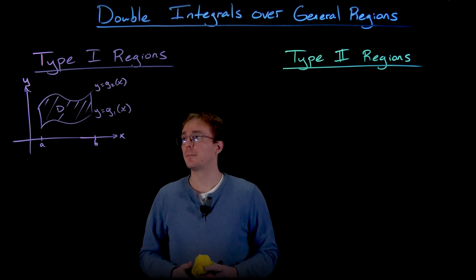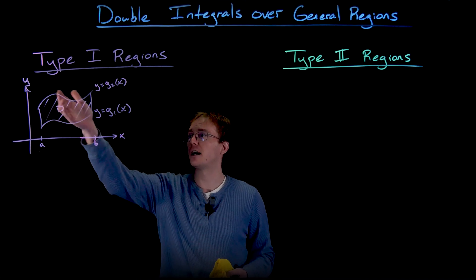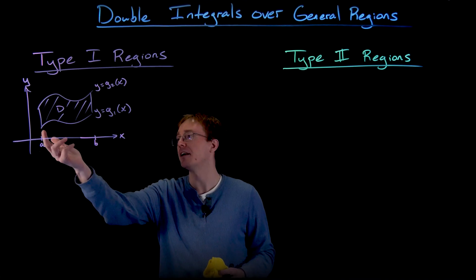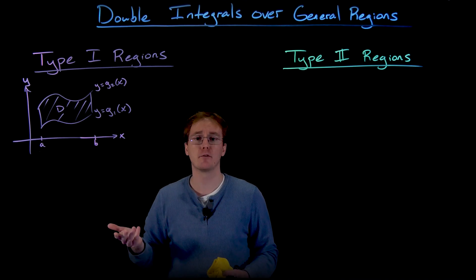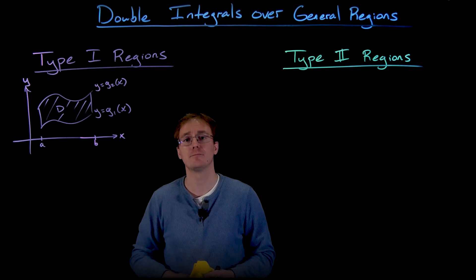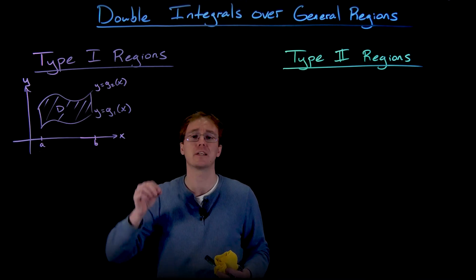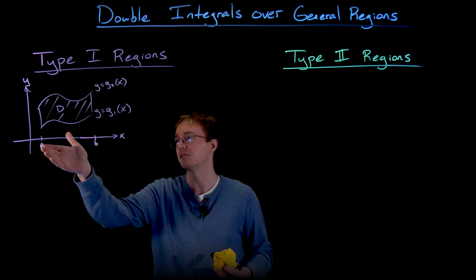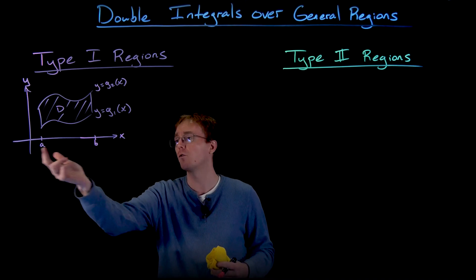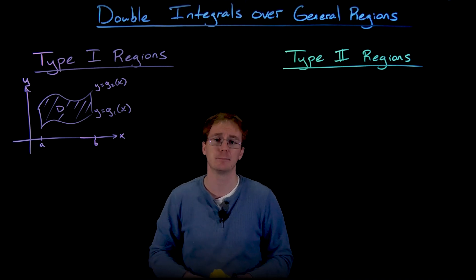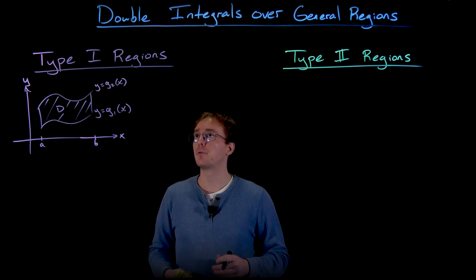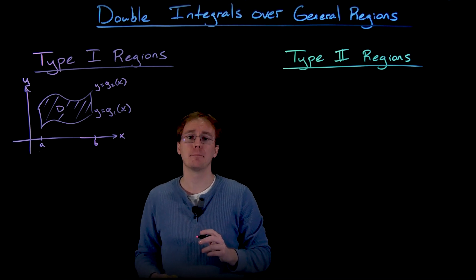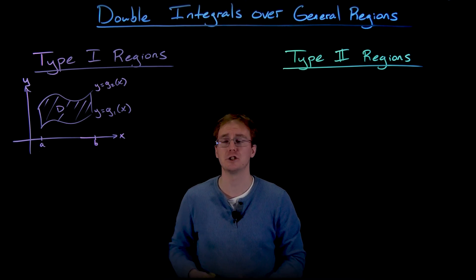Here's an example of what a type 1 region might look like. We have a curve that defines the top of our region — a function of x given by y equals g2 of x — and another curve that defines the bottom. It's not always the case that our curves intersect and close off our region; we'll just be looking at the region between these two curves over the interval of x values from a to b.